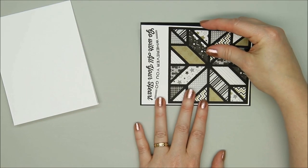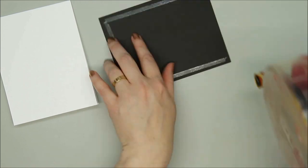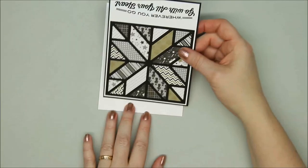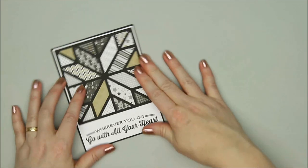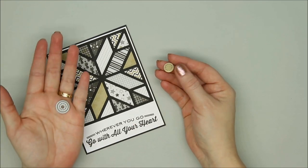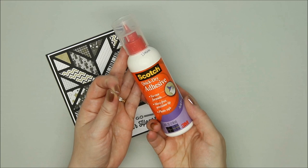The card base is A2 size, 4 1⁄4 inch by 5 1⁄2 inches. I always use a nice heavyweight paper for my card bases. For a final finishing touch, I cut out a small stitch circle from Lawn Fawn to add to the center of the quilt.